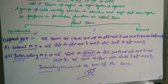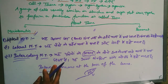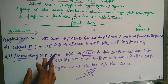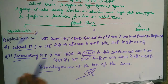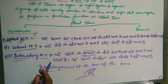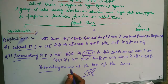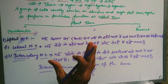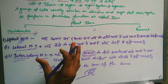Meristematic tissue helps in the formation of new tissues and organs, increases the length of roots, shoots and branches, helps in the formation of new leaves, buds, and flowers, and helps to form a protective covering over the plant.